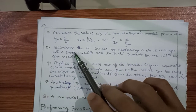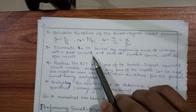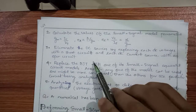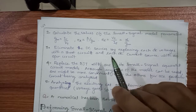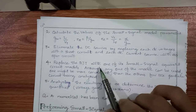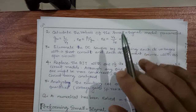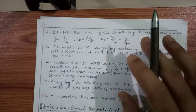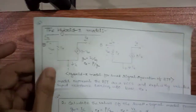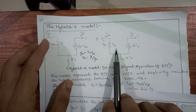In the third step, eliminate the DC sources by replacing each DC voltage source with a short circuit and each DC current source with an open circuit. In the fourth step, replace the BJT with one of its small signal equivalents — either the hybrid pi model or the re model. You can choose either representation according to your convenience: one uses G_m·V_be (voltage controlled) and the other uses beta·I_b (current controlled).